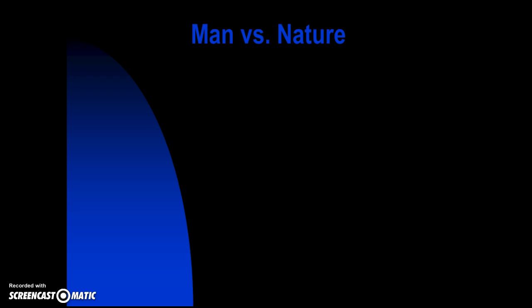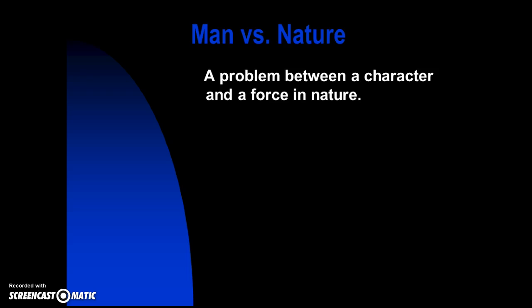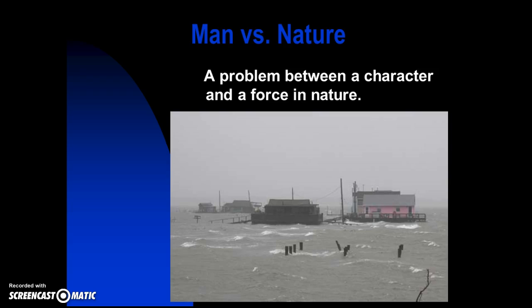Man versus nature — this is a problem between a character and a force in nature. Note: man versus a bear is still man versus man, since a bear is a character. Man versus nature would be more along the lines of a hurricane. This is flooding in West Wildwood during a hurricane — West Wildwood tends to flood big time, as you can see. Man versus nature.